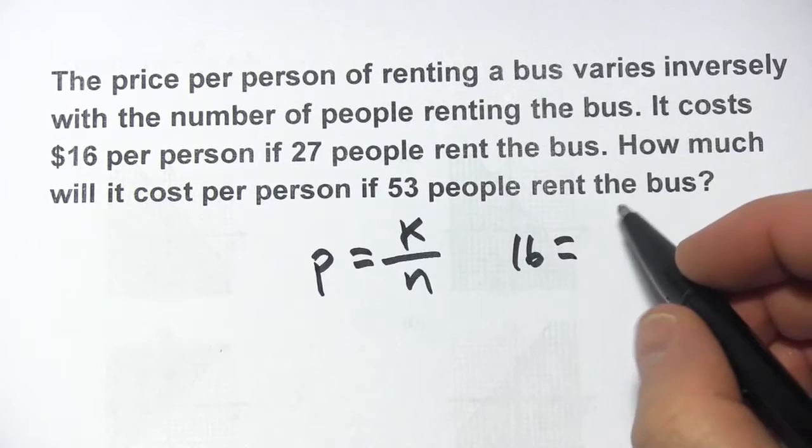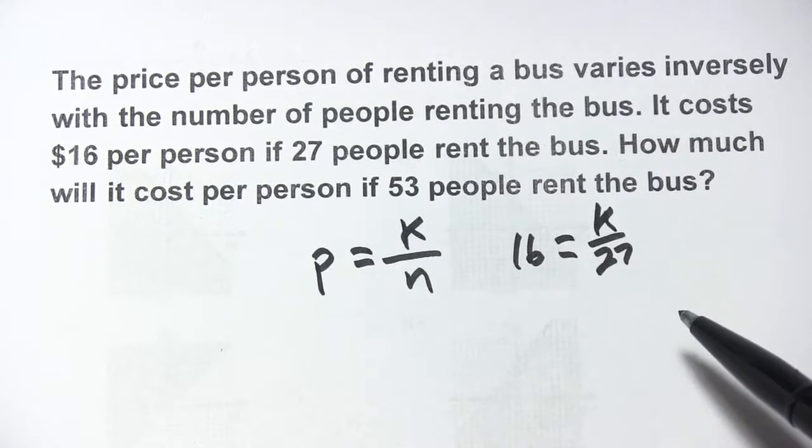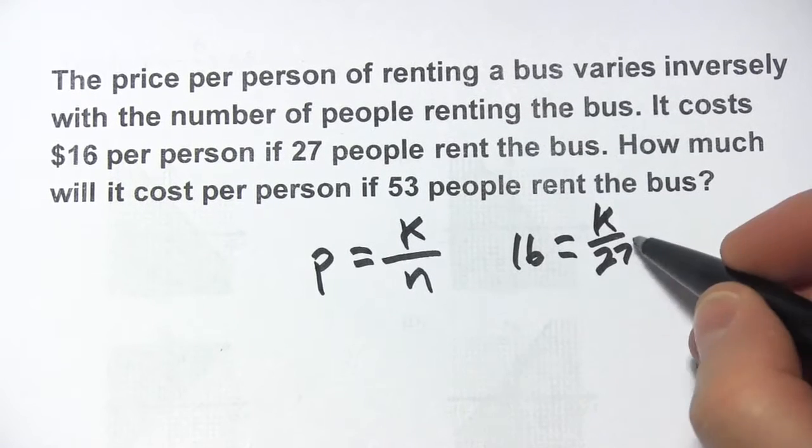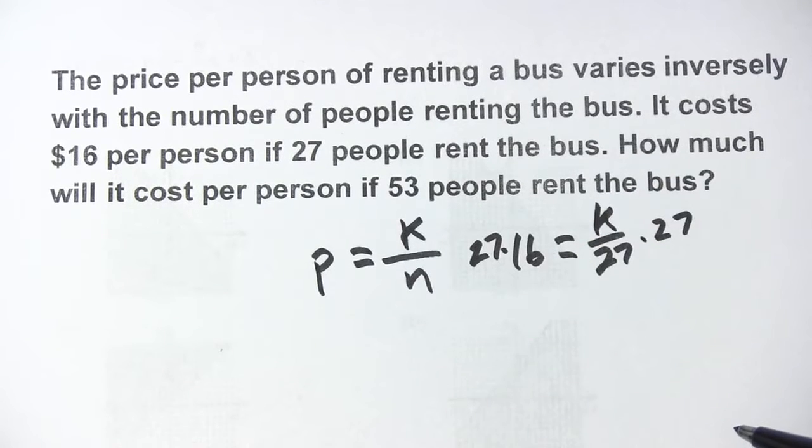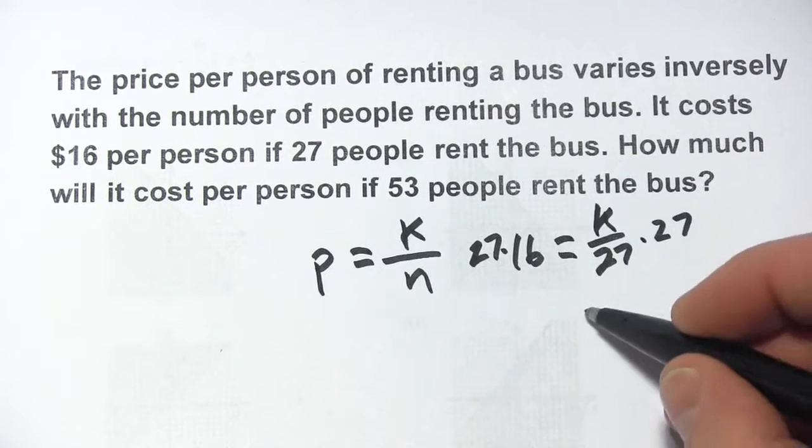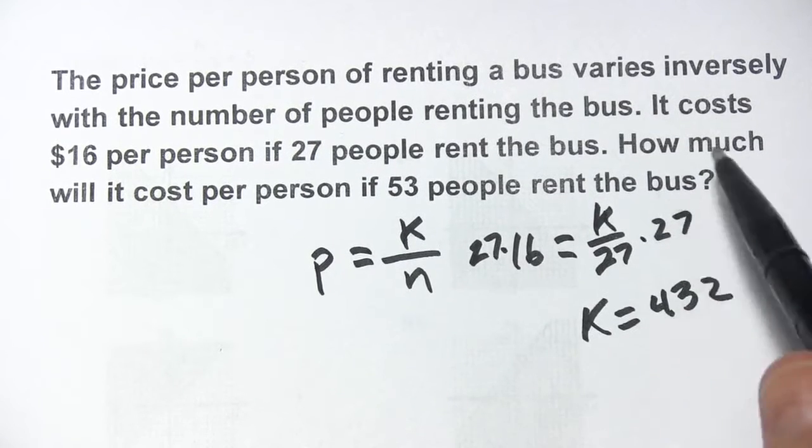When the number of people is 27, so k over 27. Then we're going to multiply each side by 27 here, and I think k is going to be 432.